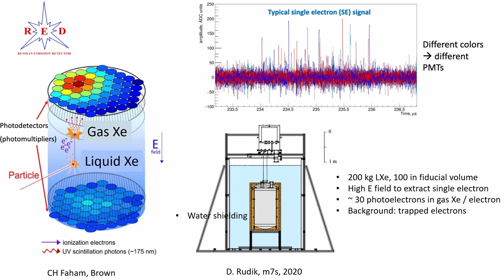The last ionization detector is liquid xenon-based. Charge carriers created by nuclear recoils are extracted from liquid xenon to gaseous xenon to create scintillation light in the gas phase. One electron can create about 30 photoelectrons. It is both dense and sensitive to single electrons. However, a problem is the random emission of electrons trapped in different places in the detector.